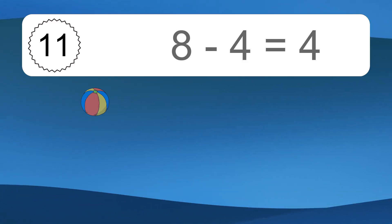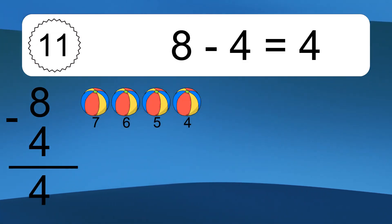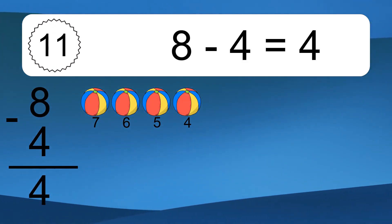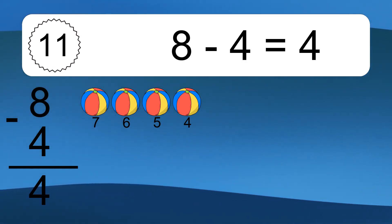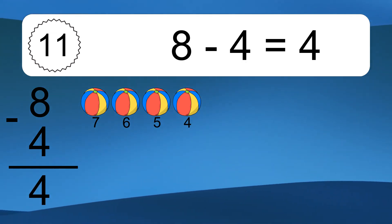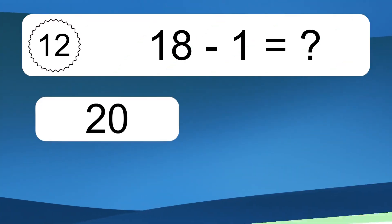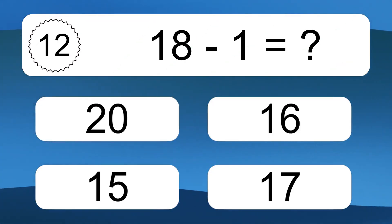18 minus 4 equals what? 18 minus 4 equals 14. Let's count it. 17, 16, 15, 14.